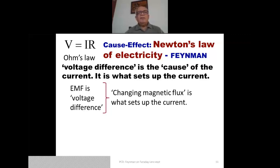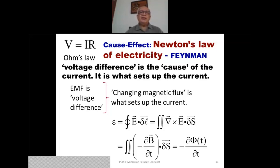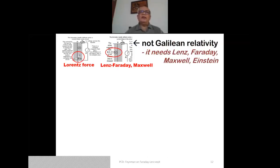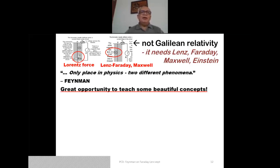The voltage difference can also be generated by a changing magnetic flux — a different source that can generate a voltage difference and set up a current, as we have seen in the Lenz-Faraday-Maxwell law. The electromotive force is generated by the changing magnetic flux, which is minus del phi by del t. This is not Galilean relativity; it needs Lenz, Faraday, and Maxwell, and I will explain how it brings us to Einstein.